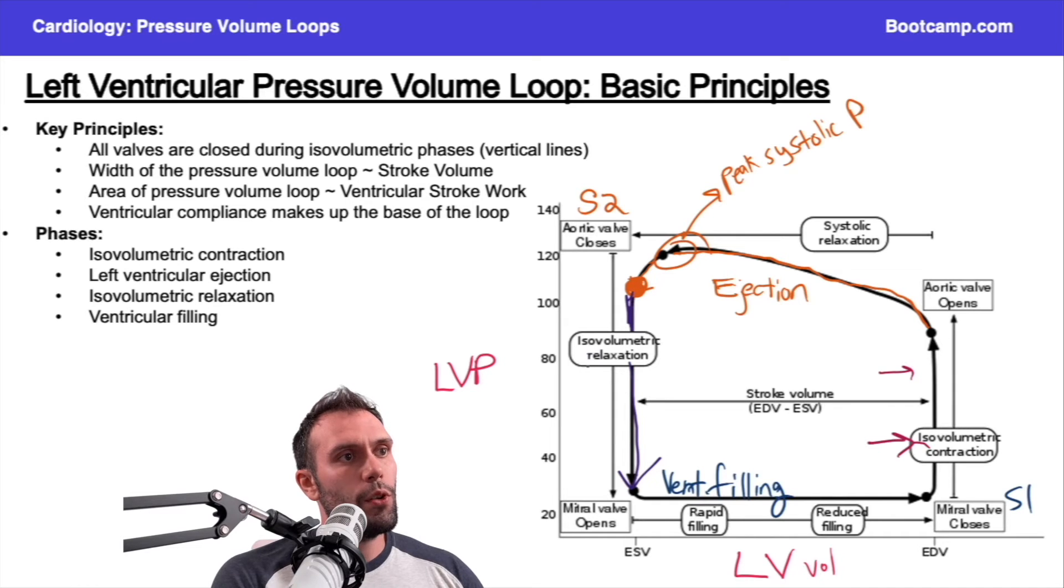With all of the valves closed, the ventricles can relax. We get this rapid descent in the pressure that eventually gets us so low in pressure that the left atrial pressure will exceed the left ventricular pressure, opening the mitral valve, starting the whole process again.